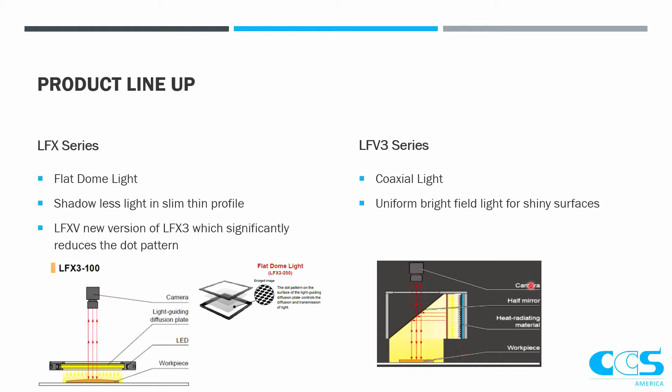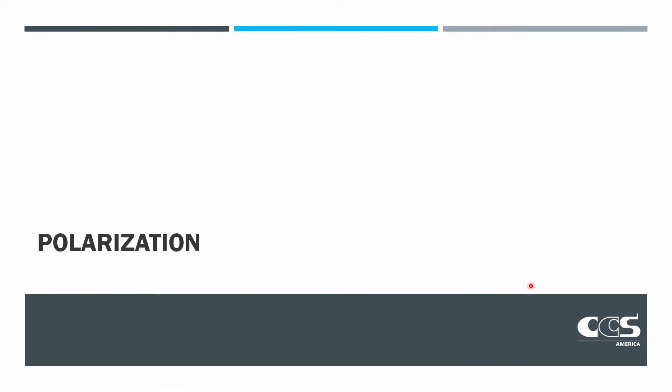Usually we cannot know for sure which one of those will work best. We always recommend testing to figure out if we need to add light control film to the coaxial light or not. So that's all for collimation — just making sure you're using the right working distance, the right size light, and if you really need a highly parallel, highly collimated backlight to see fine defects, using the right light for that as well.